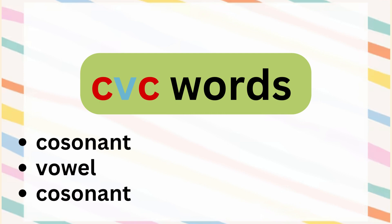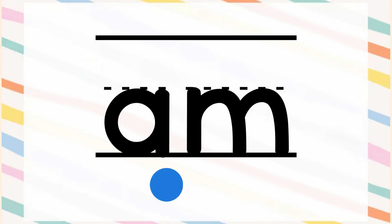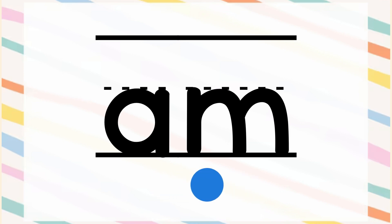This means that there is always a vowel between the two consonants. In the AM family, the sound of the letter A is 'at' and the sound of letter M is 'mmm'. Together it is 'am'.